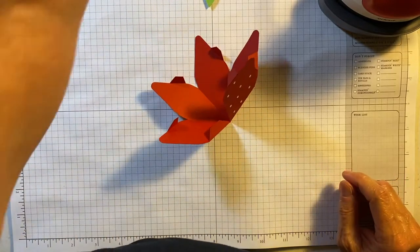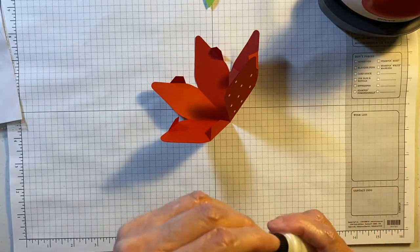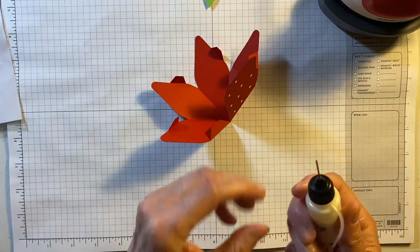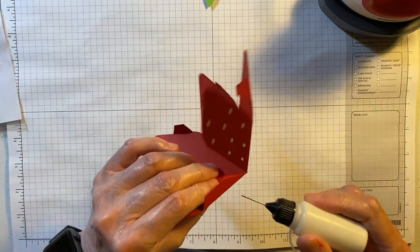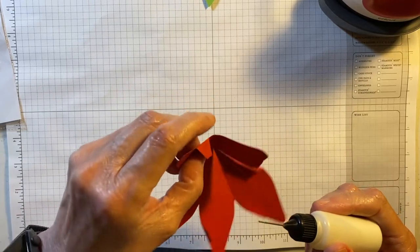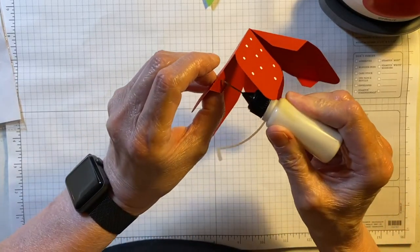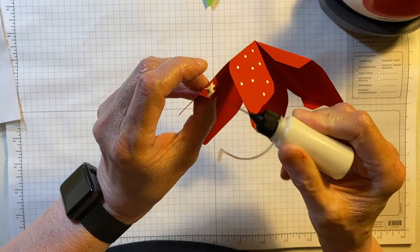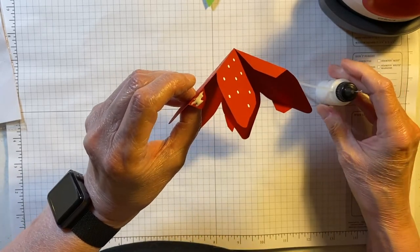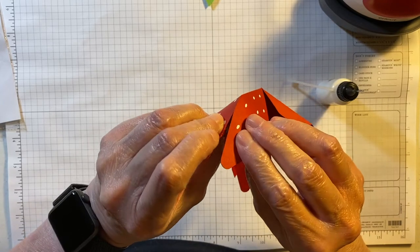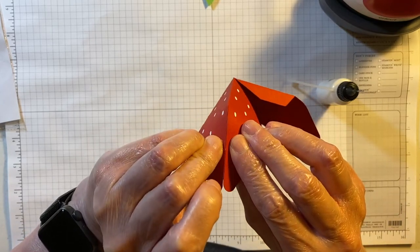And then I'm going to take some art glitter glue. This is art glitter glue. I just have it in a little container, and I'm going to glue these little pieces together.